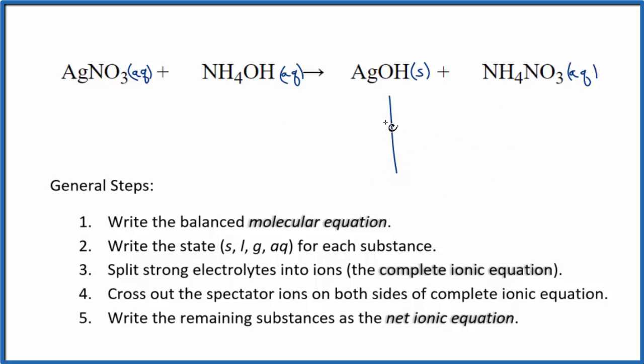We have our states. Next we split strong electrolytes into their ions. That'll give us the complete ionic equation. So Ag is always 1+, the nitrate is 1-, so we'll have our silver ion and nitrate ion NO3-. The ammonium ion is 1+, the hydroxide is 1-, so we'll have NH4+ and our hydroxide ion OH-.